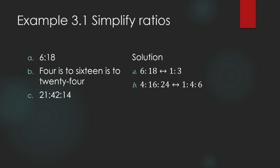Next, 4 is to 16 is to 24. The common factor is 4. So 4 divided by 4 is 1, 16 divided by 4 is 4, and 24 divided by 4 is 6. The proper way of writing this ratio is: 1 is to 4 is to 6.